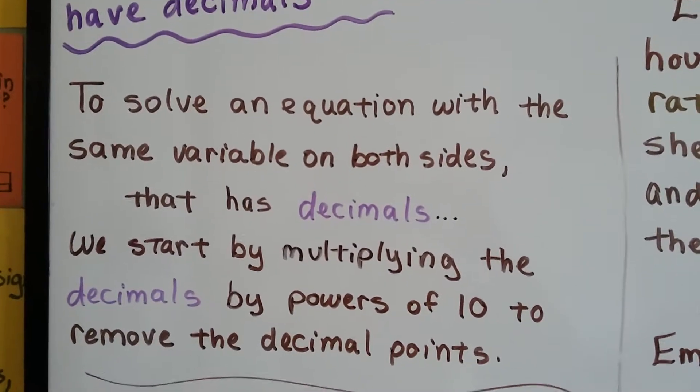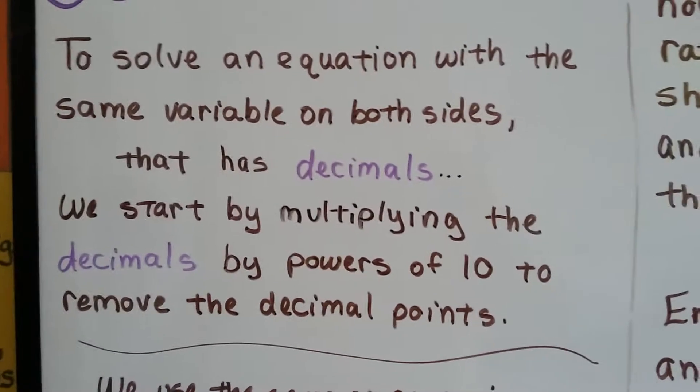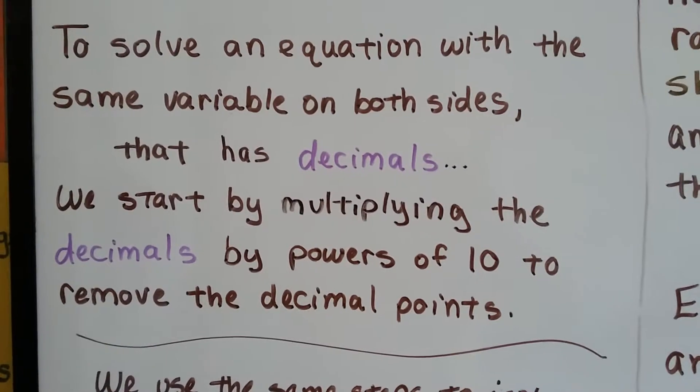To solve an equation with the same variable on both sides that has decimals, we start by multiplying the decimals by powers of 10 to remove the decimal points.